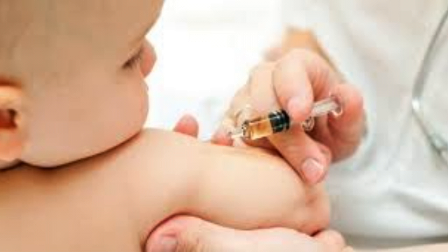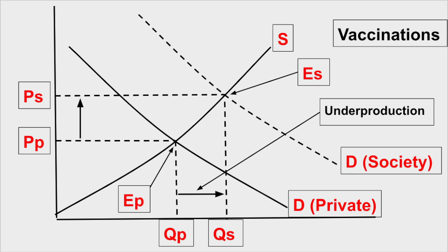Let's look at our demand/supply diagrams to show what we mean by underproduction. If you got the flu vaccine on campus last week, you're of course protecting yourself, but you are also contributing to protecting the rest of the Loomis community, your family, and the local community. By reducing the chances of you getting sick, you also reduce the chance of spreading the flu to other people, providing a broader benefit beyond yourself.